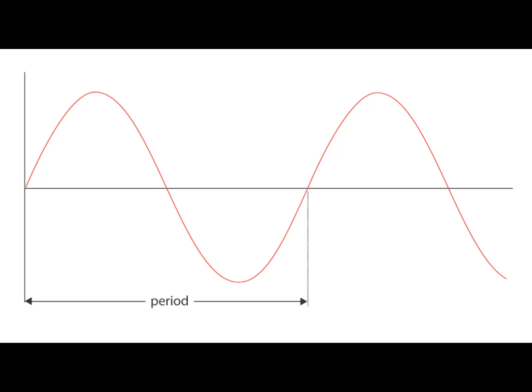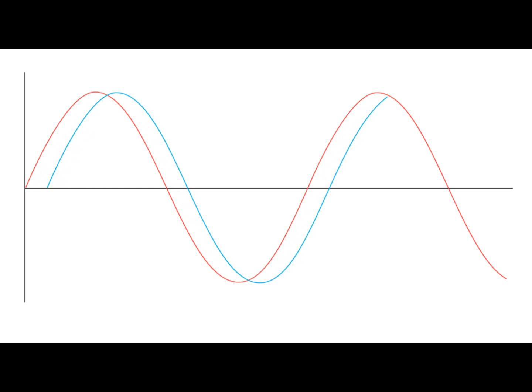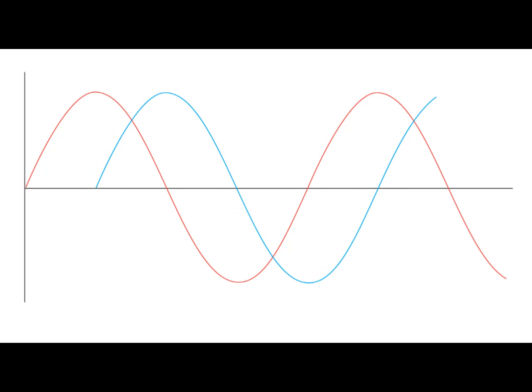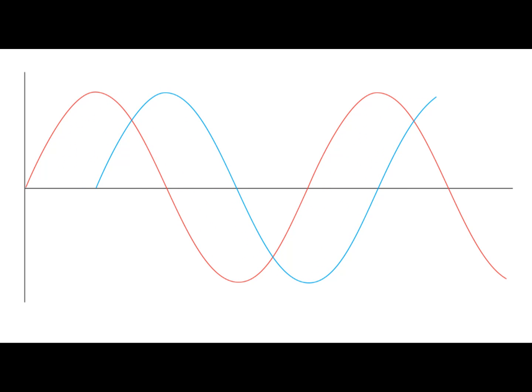If we take another sine wave of the same size and frequency and overlay it, it would be considered to be in phase. If we move it later in time, it would be out of phase. The amount that it's out of phase is measured in degrees, and this is the phase shift. The distance between positive zero crossings can measure the degree of phase shift. So in this case, it's 90 degrees out of phase.